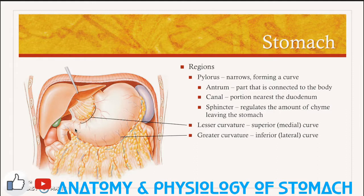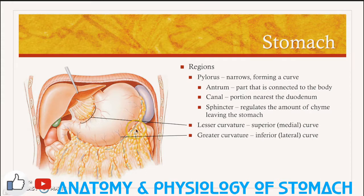Between the stomach and small intestine is a band of smooth muscle called the pyloric sphincter. This helps regulate the amount of chyme leaving the stomach. The more medial curve between the esophagus and small intestine is called the lesser curvature, and the larger, more lateral curve is called the greater curvature.